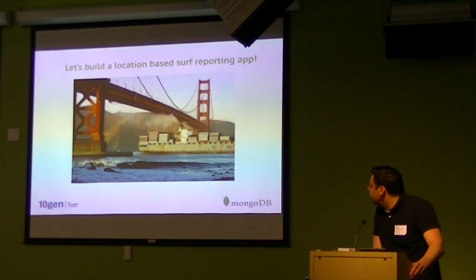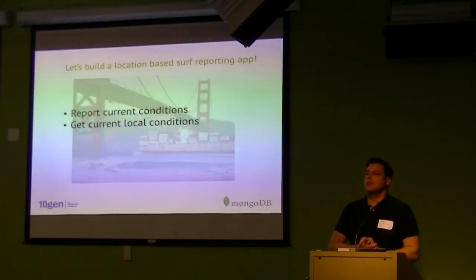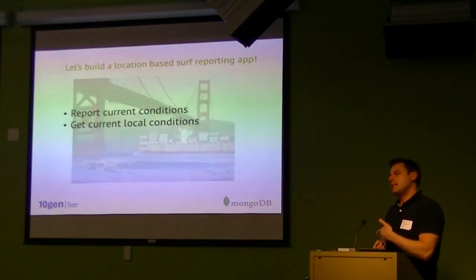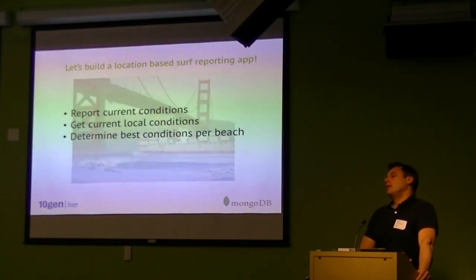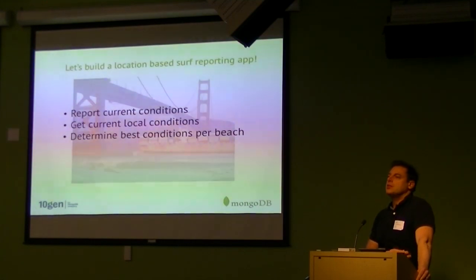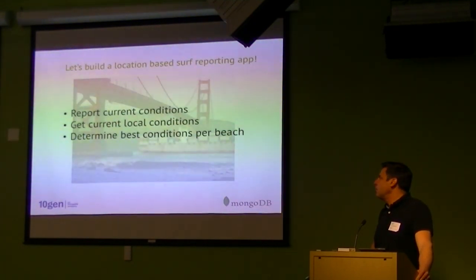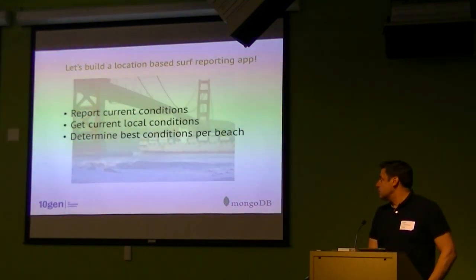We're going to aggregate this data and report it back for other users who can check what's going on at the beach, if the conditions are good. The functionality we want is to allow users to report current conditions — quite a bit of concurrent data coming into the system. We'll also allow users to get current conditions at a local spot using geolocation from their mobile app. Then we want to add value to the data — get insight as to what the best conditions are for a beach, since beaches are like antennas tuned to certain frequencies and can be overloaded.